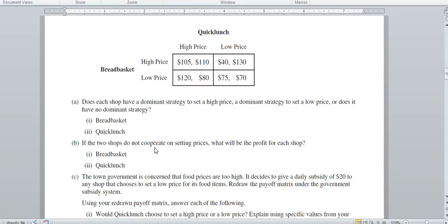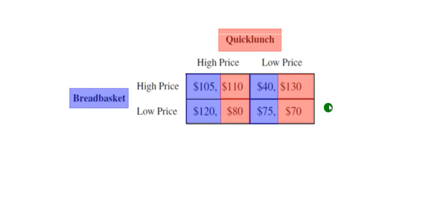If the two shops do not cooperate on setting prices, what will the profit be for each shop? Bread Basket is going to choose a low price. Given that, Quick Lunch does not want to also choose low — if Bread Basket goes low, Quick Lunch is going to want to choose high because 80 is better than 70. So the profits should be 120 for Bread Basket and 80 for Quick Lunch.